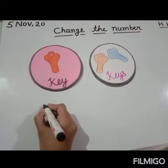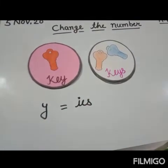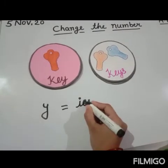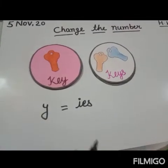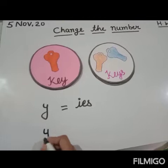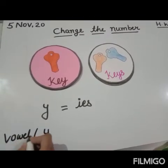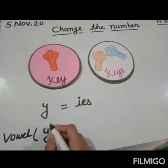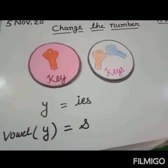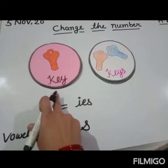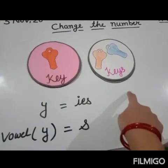Now, you may have seen in first class that ma'am used to say when Y comes at the end, remove Y and add I-E-S. But here ma'am did not remove Y and add I-E-S. Why? Because the letter before Y is a vowel sound. Vowels are A, E, I, O, U. If there is a vowel sound before Y, we simply add S. See, in 'key', before Y there is E, which is a vowel, so we added S — Key becomes Keys.